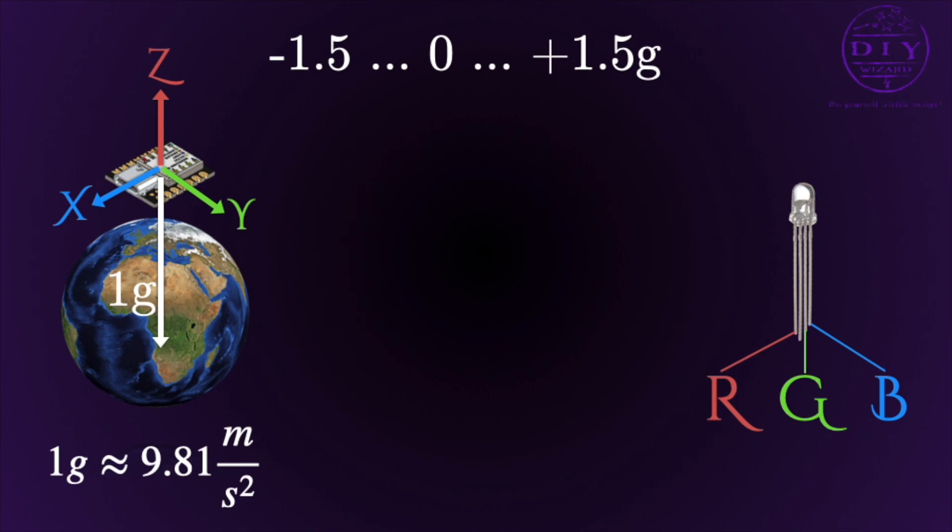And now we have to translate this to our RGB colors. What I found useful is that I ignore the sign. So if it's negative, I just see it as positive because it doesn't matter which direction, left or right, I do the acceleration. So that's the first thing I do in the program.